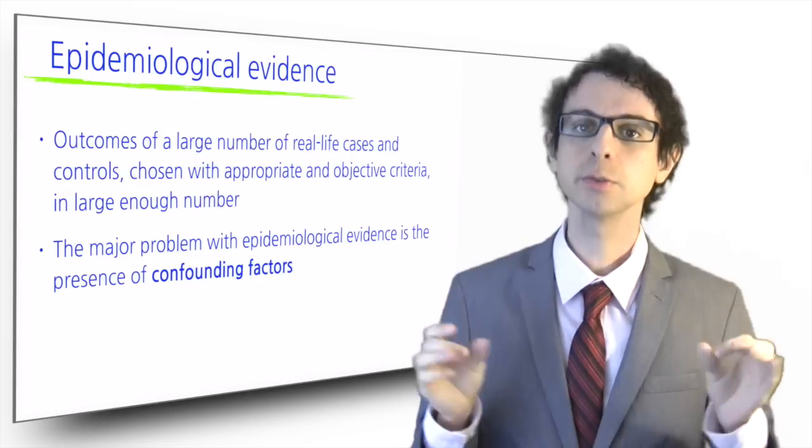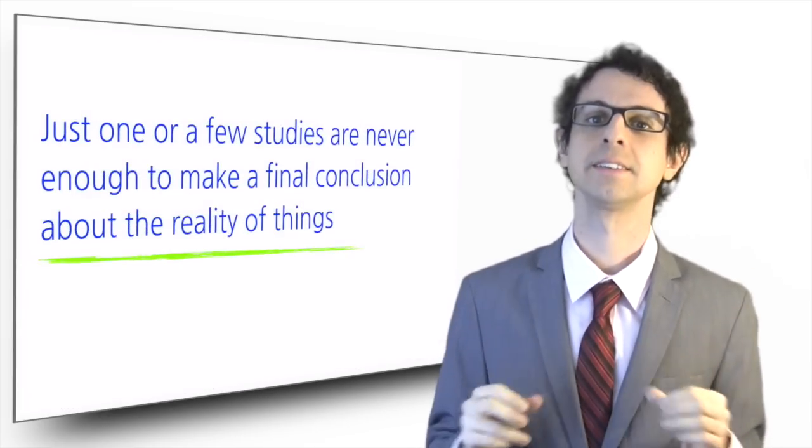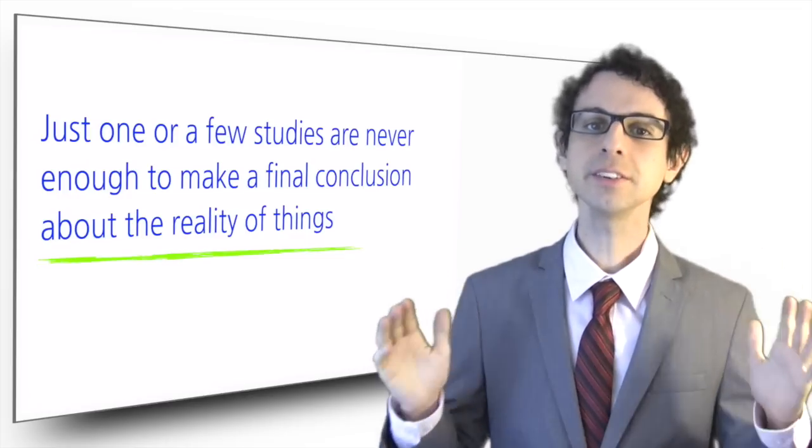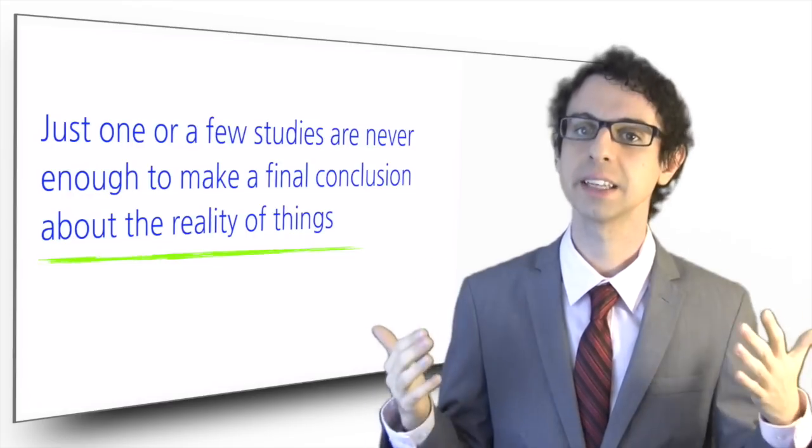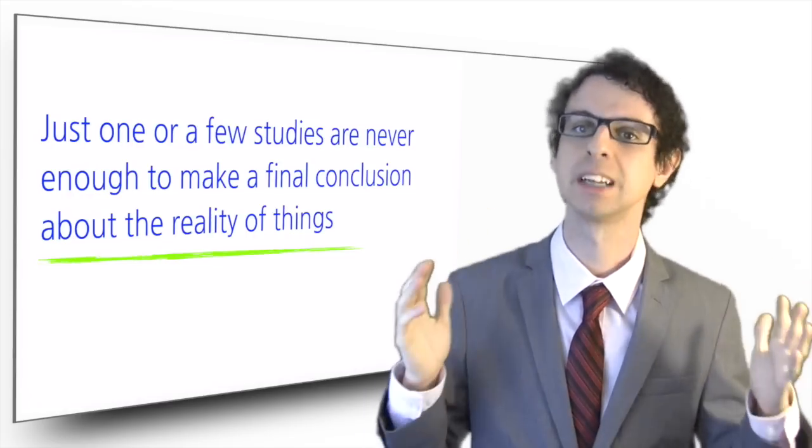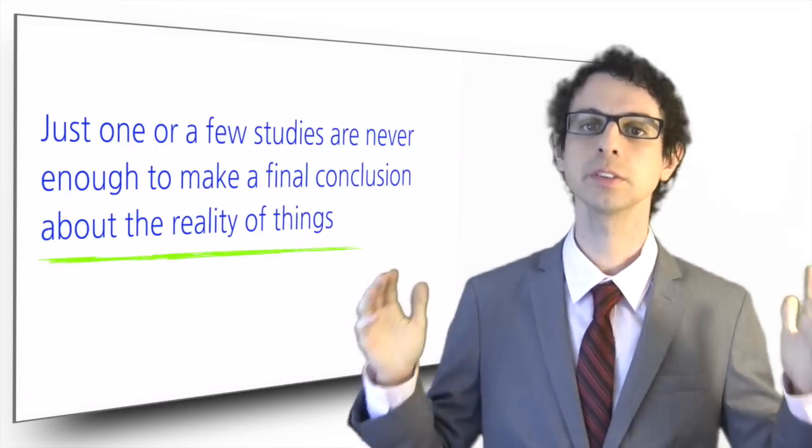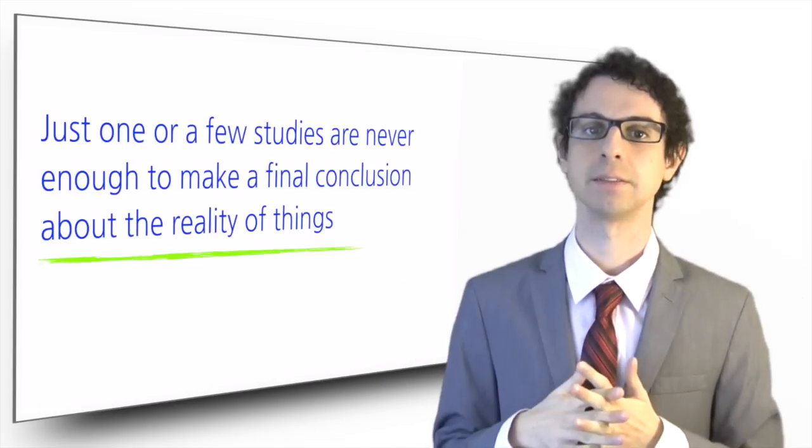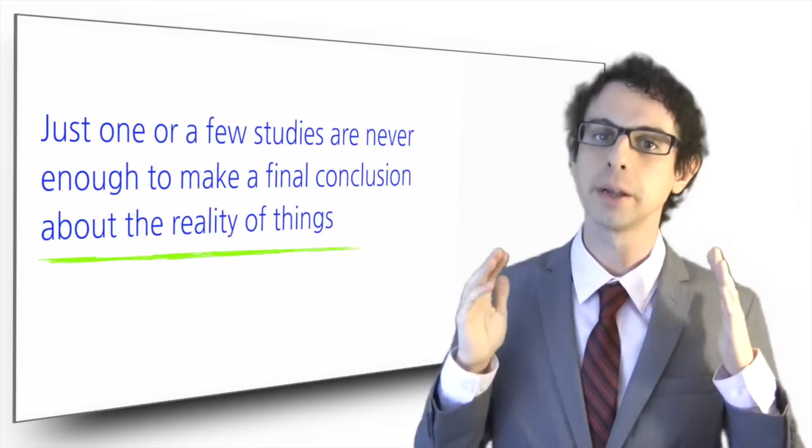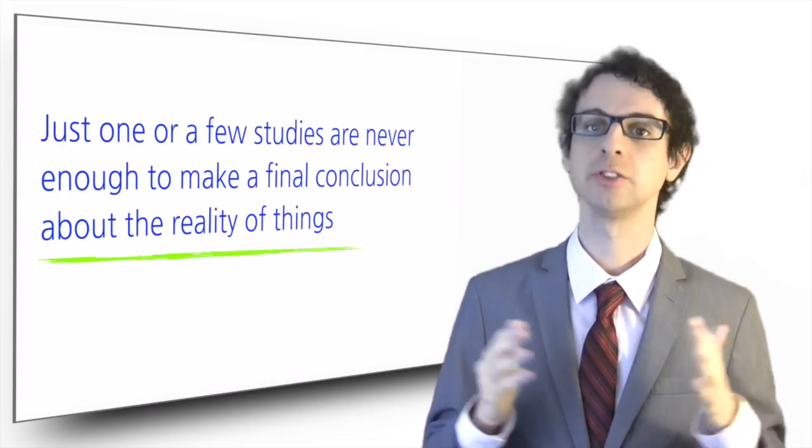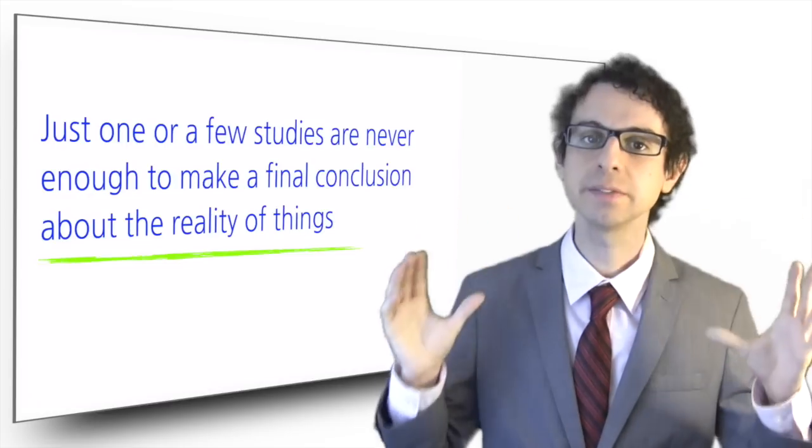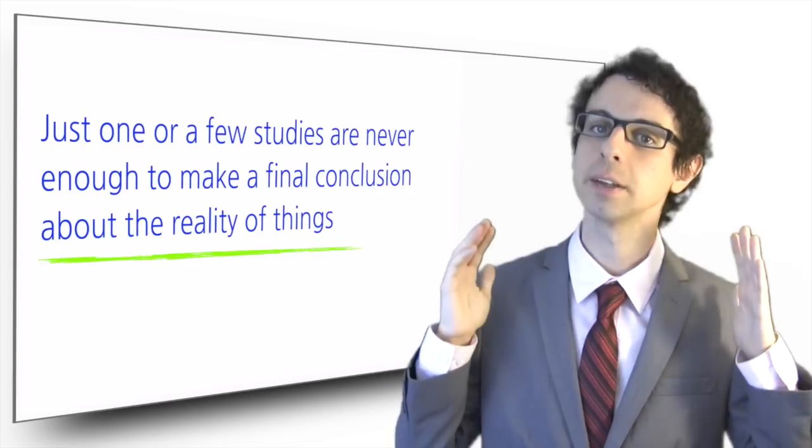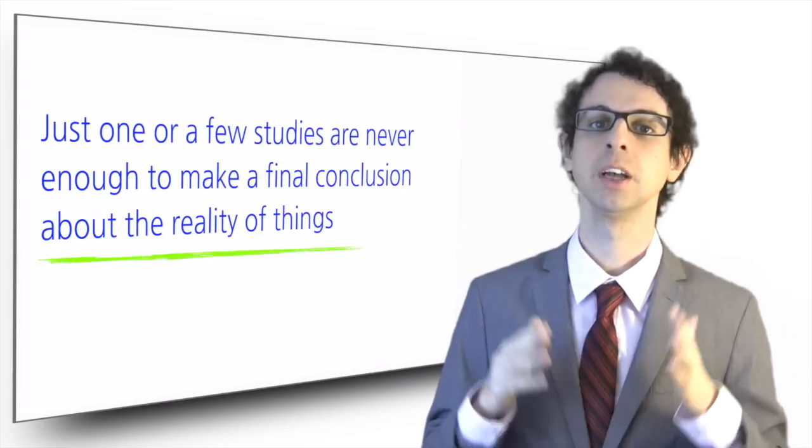But what's important to remember now is that just one or a few studies are never enough to make a final conclusion about the reality of things. The universally accepted nutritional guidelines that we will study in this course are never based on just a bunch of studies, but on a large body of numerous, consistent and replicable evidence that have been generated at many different levels. Mechanistic level, cellular level, biochemical level, chemical level, epidemiological level, clinical level, in a way that everything fits and points to the same conclusion, convincingly supporting a theory to the point that we are confident to make practical recommendation to the population.